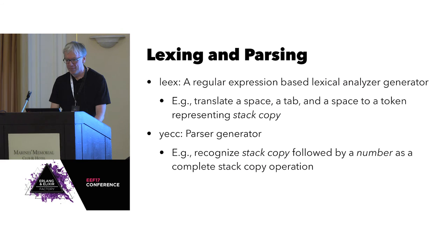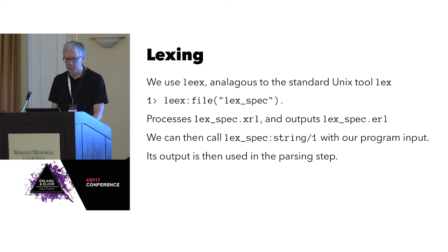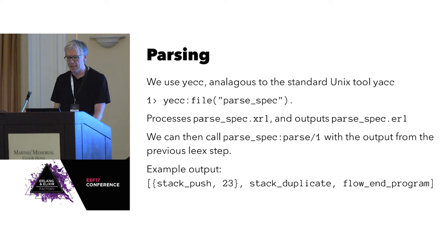Lexing and parsing: we need to take the stream of tokens and ultimately get a form that we can programmatically operate on. Leex is a built-in tool in Erlang OTP, very similar to the Unix tool Lex, except they just added an E to it. The output from Leex goes into the parsing stage, also similar to the Unix tool Yacc, with an E replacing it — Erlang. And on the bottom here, we see this is the output, and this list is what my code will operate on.